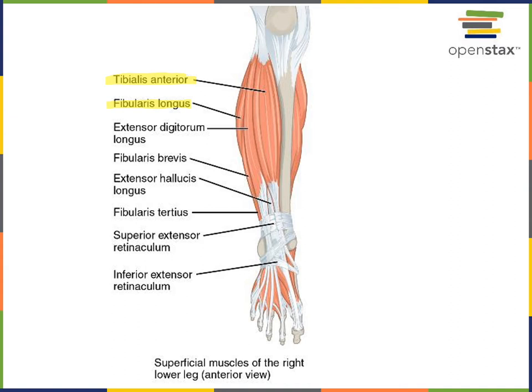Fibularis longus is a muscle located on the lateral aspect of the crural region and is superficial. The action of fibularis longus includes plantar flexion of the talocrural joint as well as eversion. Extensor digitorum longus is located just lateral to tibialis anterior, and its action — as its name suggests — is to extend the pedal digits.